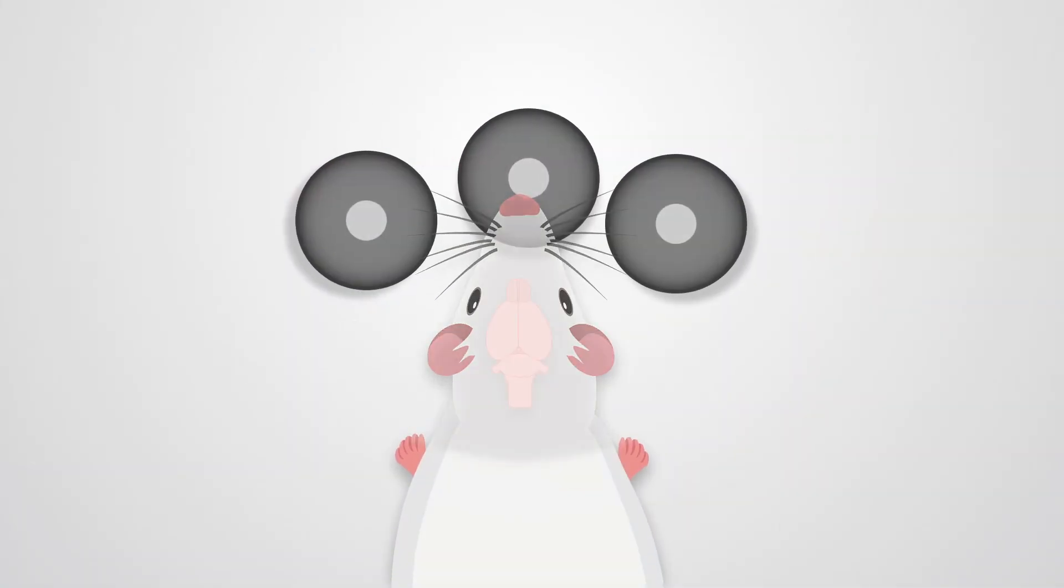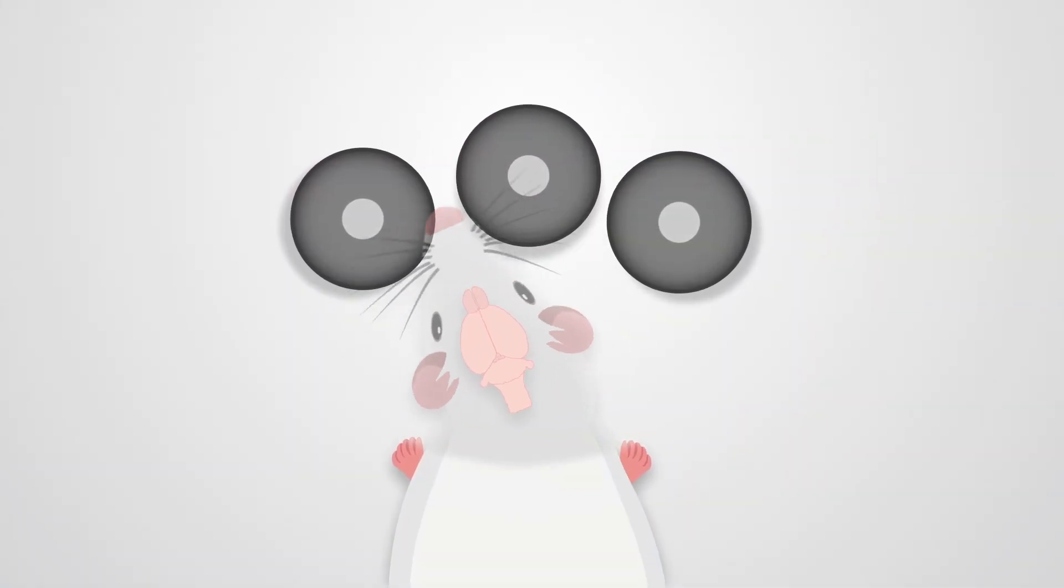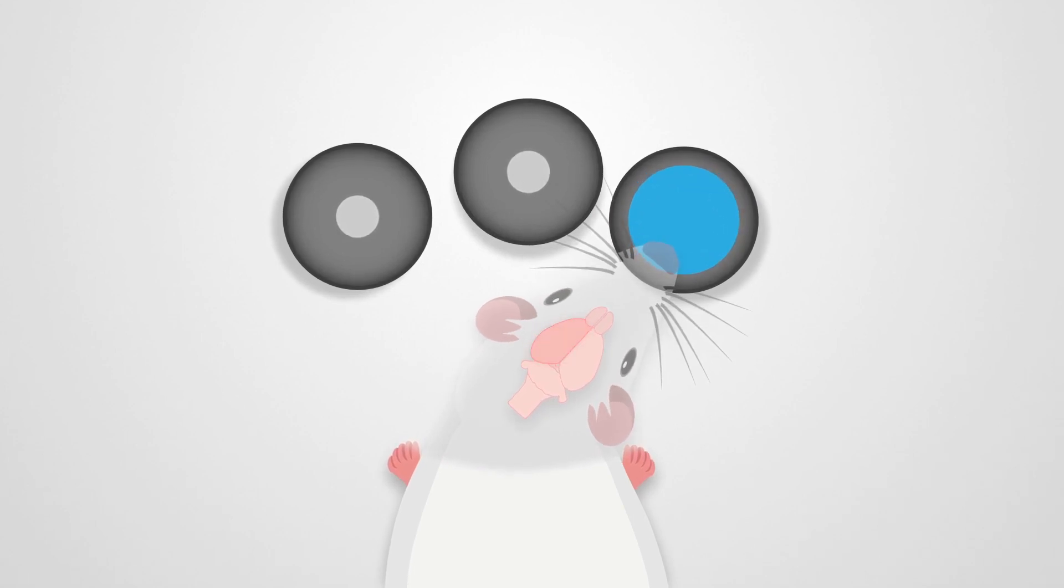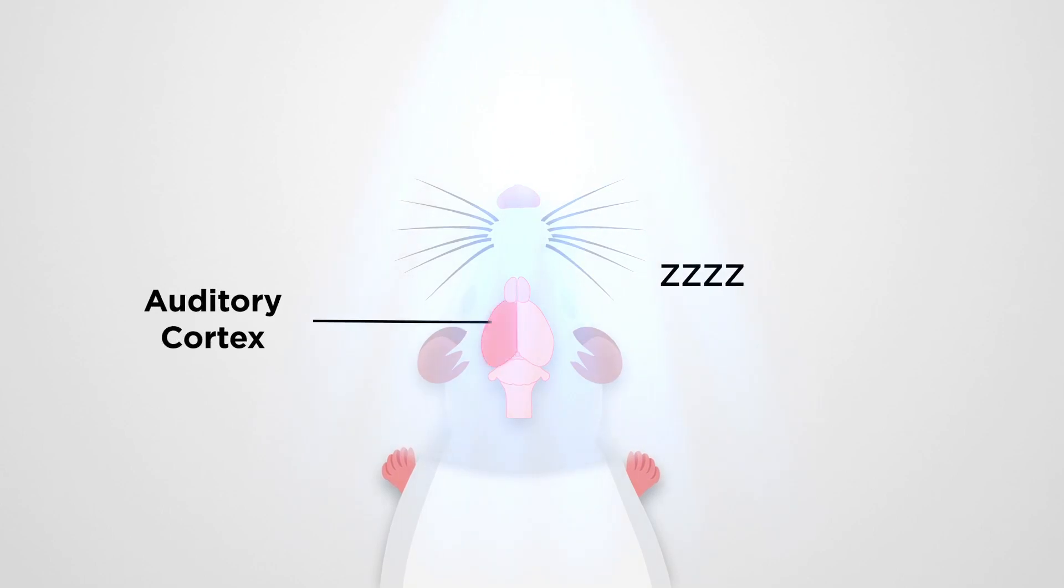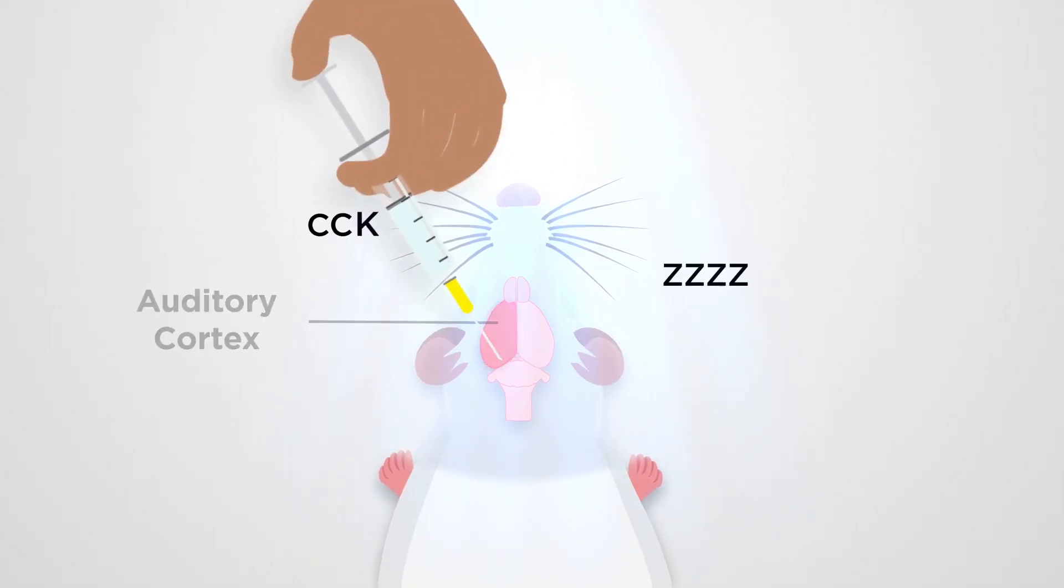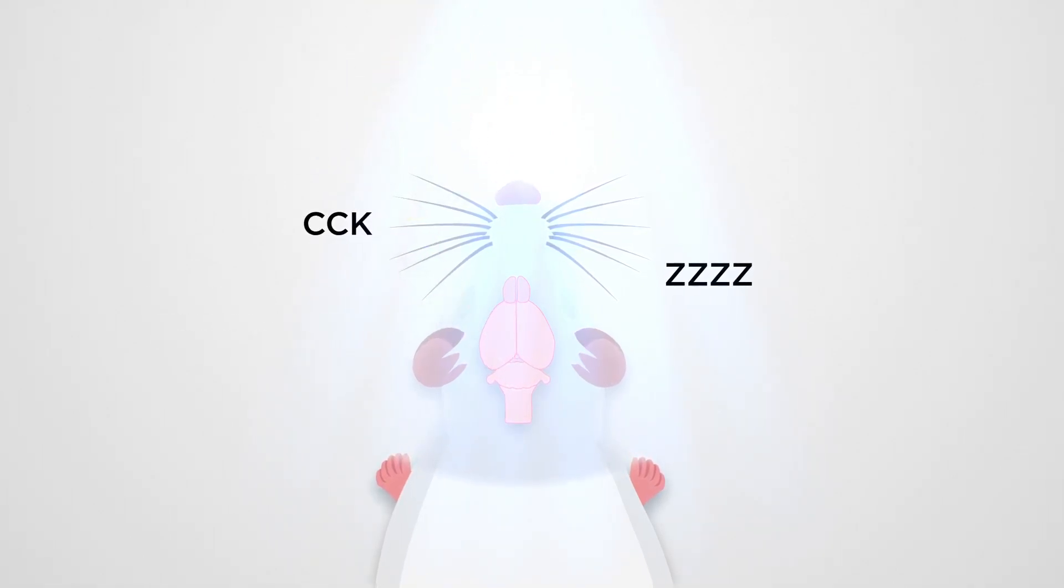In the study, rats were trained to receive a water reward depending on whether their left or right auditory cortex was stimulated. After the training, the rats were anesthetized, one auditory cortex was stimulated, CCK was infused, and light was presented as a visual stimulus.